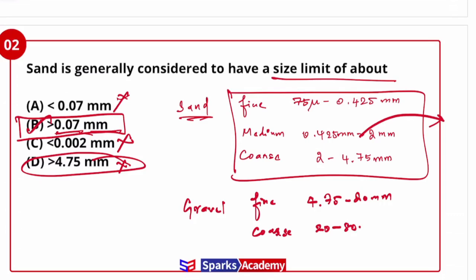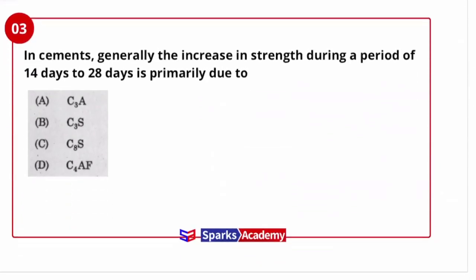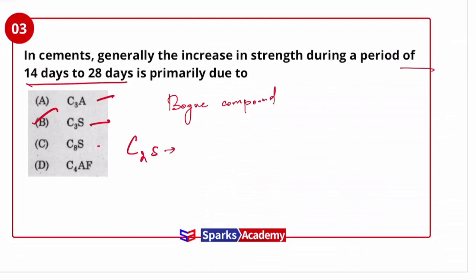Next question: in cement, the increase in strength during the period of 14 to 28 days is primarily due to? The answer is tricalcium silicate (C3S). In cement, the four main components are: C3S (tricalcium silicate), C2S (dicalcium silicate), C3A (tricalcium aluminate), and C4AF (tetracalcium aluminoferrite).